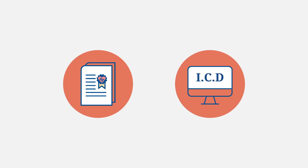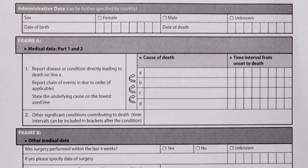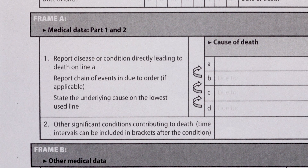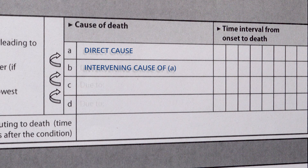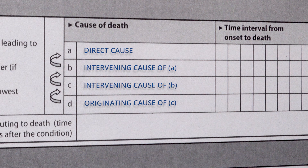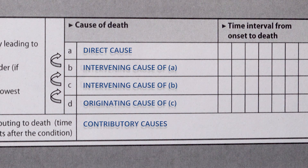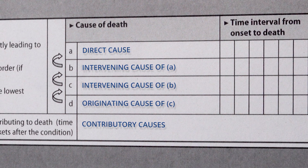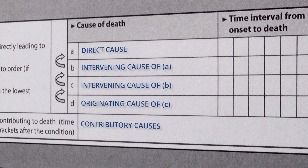Let's now look at how to certify and code COVID-19 deaths. Here we have the WHO 2016 International Form of Medical Certificate of Cause of Death. Part 1 of Frame A is where the chain of events leading to death is written, beginning at line 1A with the immediate or direct cause of death, recording preceding conditions on succeeding lines until reaching the condition that started the sequence of events. Part 2 is where all other significant diseases, conditions, or injuries are written — diabetes mellitus, hypertension, emphysema, and chronic bronchitis are examples.